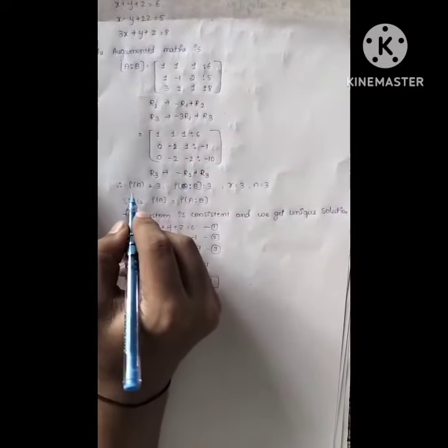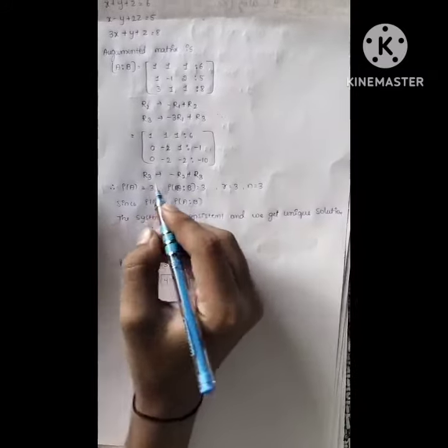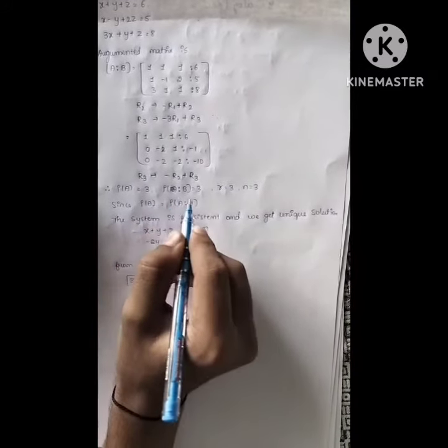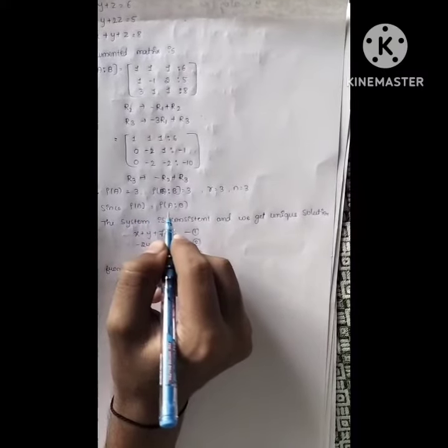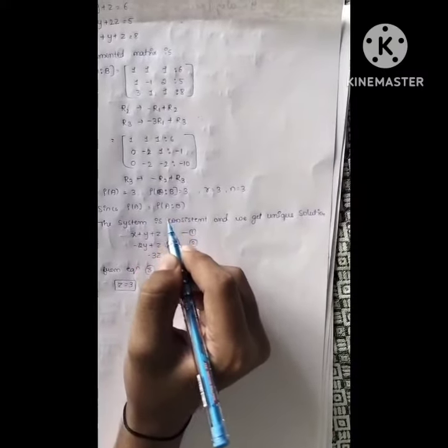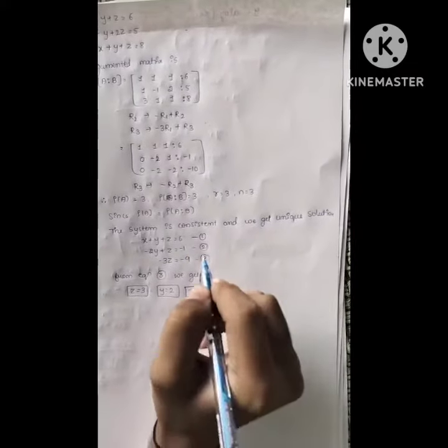Hence, the rank of matrix A is 3, and the rank of matrix A augmented B is also 3. Since rank of A and rank of A augmented B is equal, the system is consistent and we get a unique solution here.